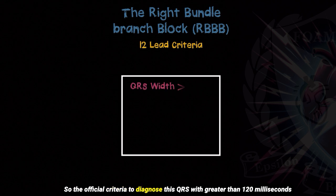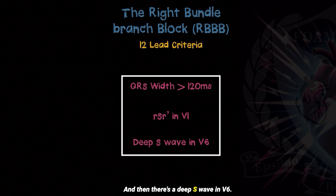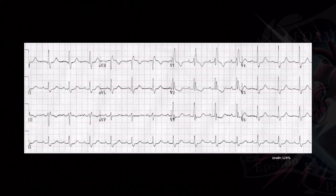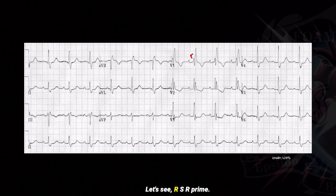The official criteria to diagnose a right bundle branch block: QRS width greater than 120 milliseconds, an RSR prime in V1, and a deep S wave in V6. Looking at another 12-lead example, we can see a slight R, then an S with an R prime pattern, and then a notable S wave in V6.